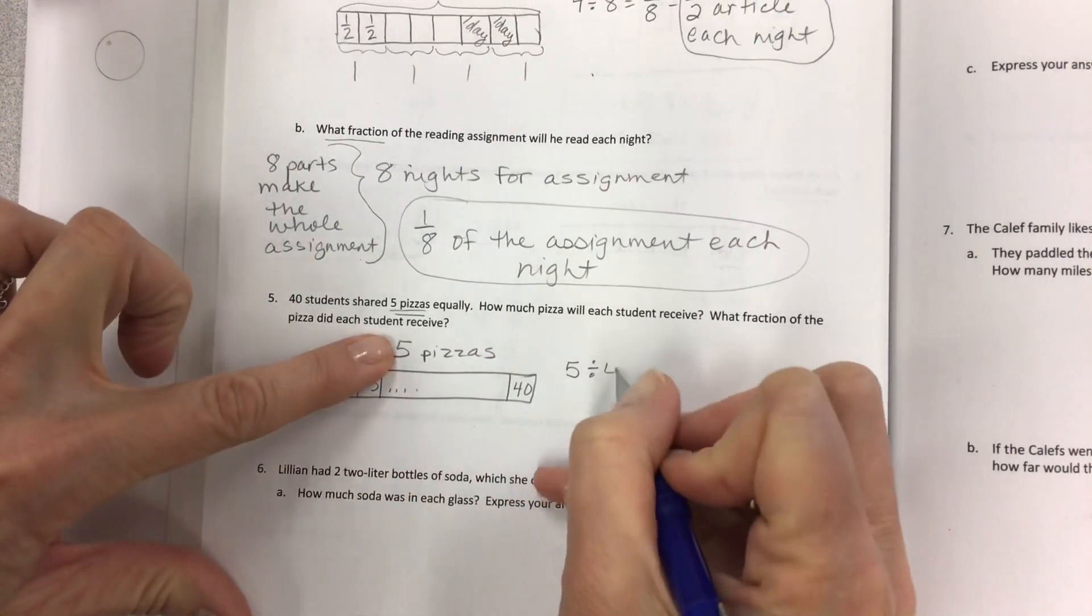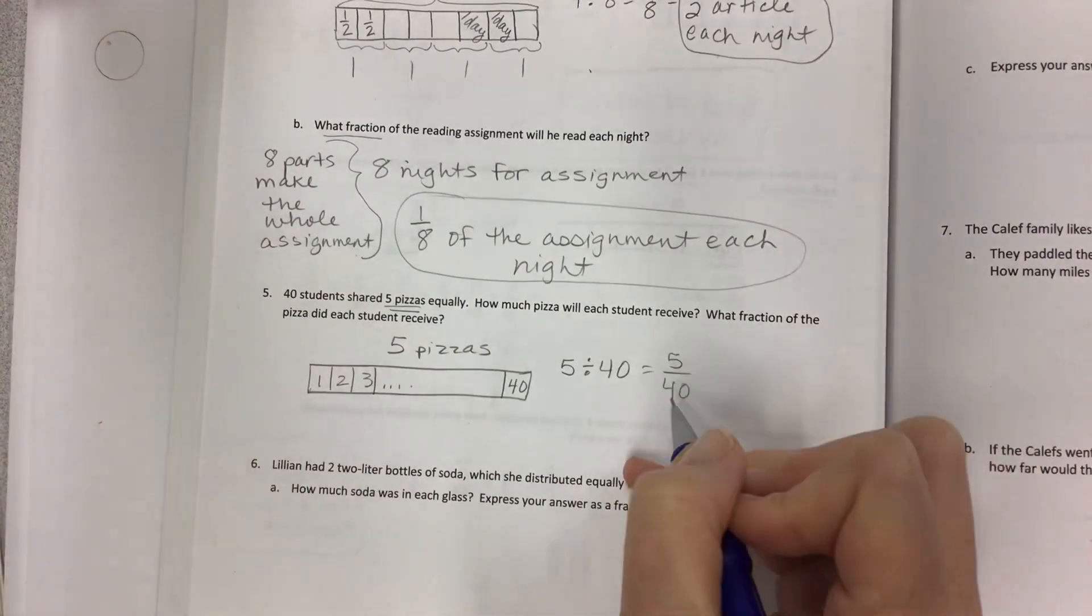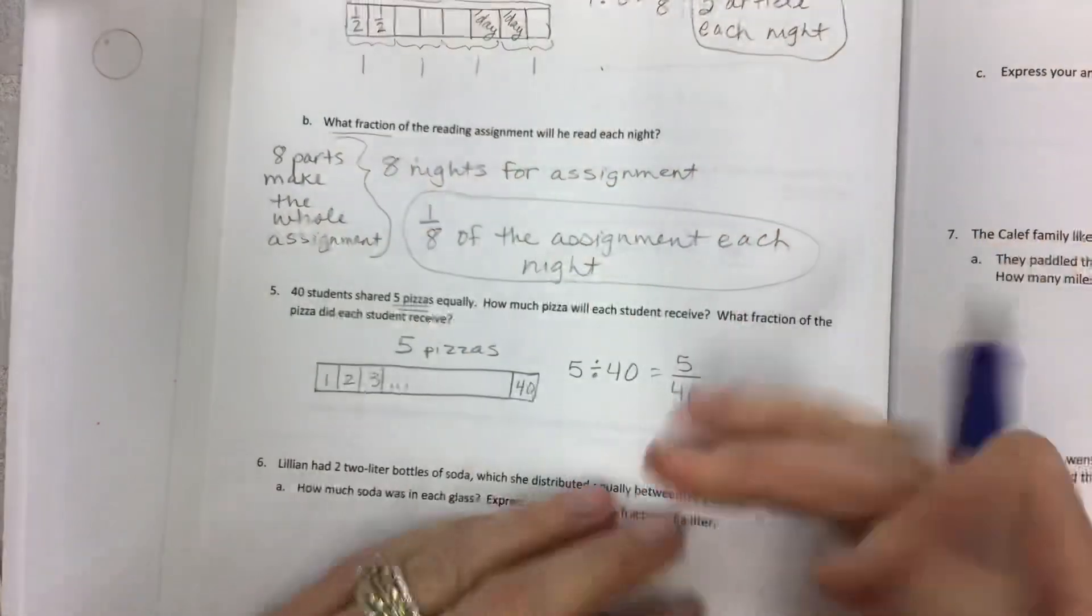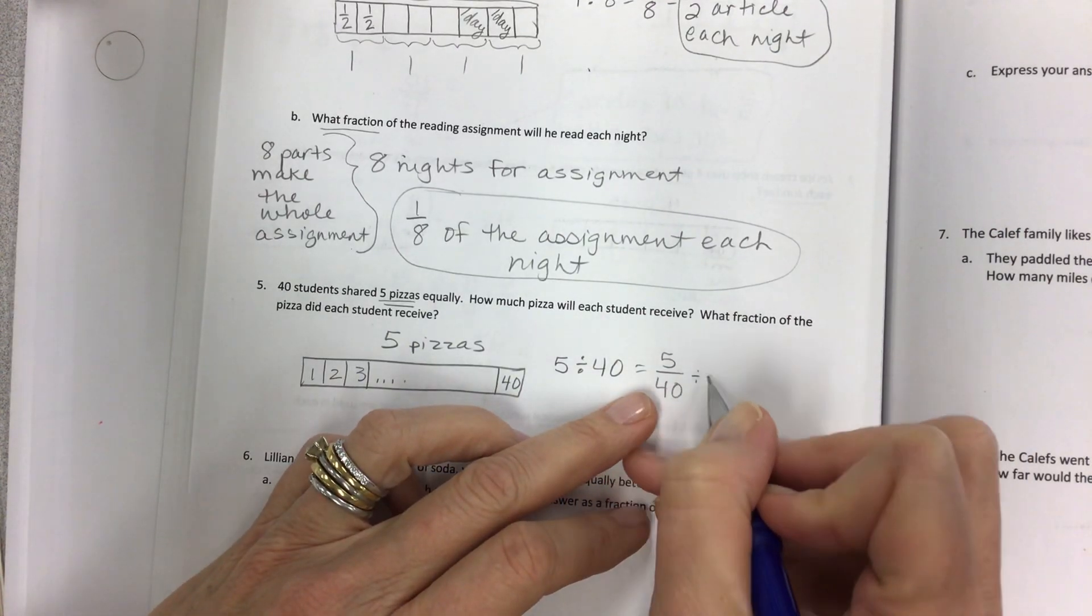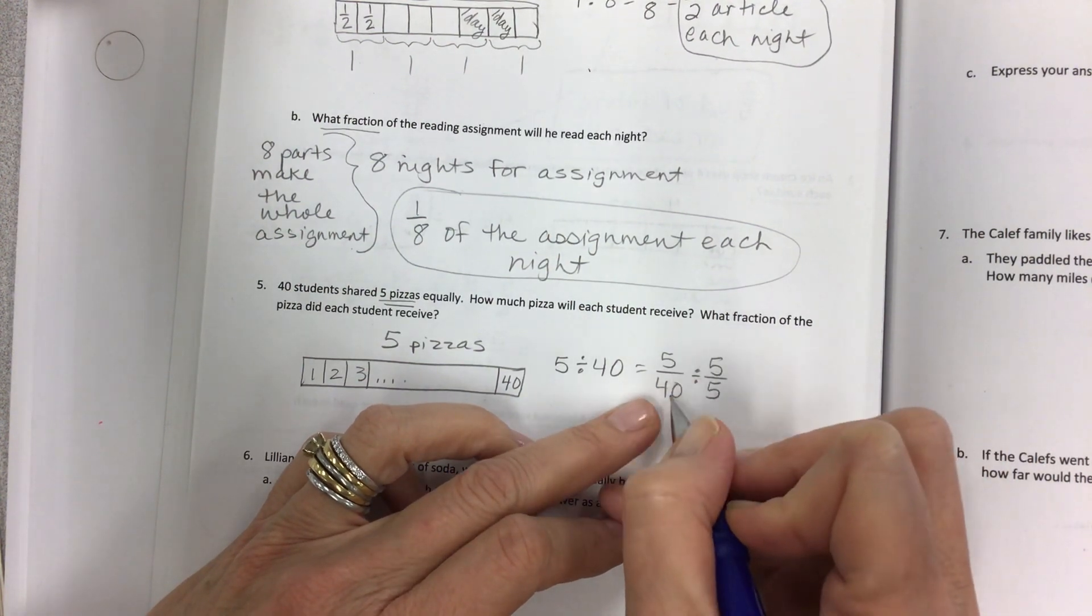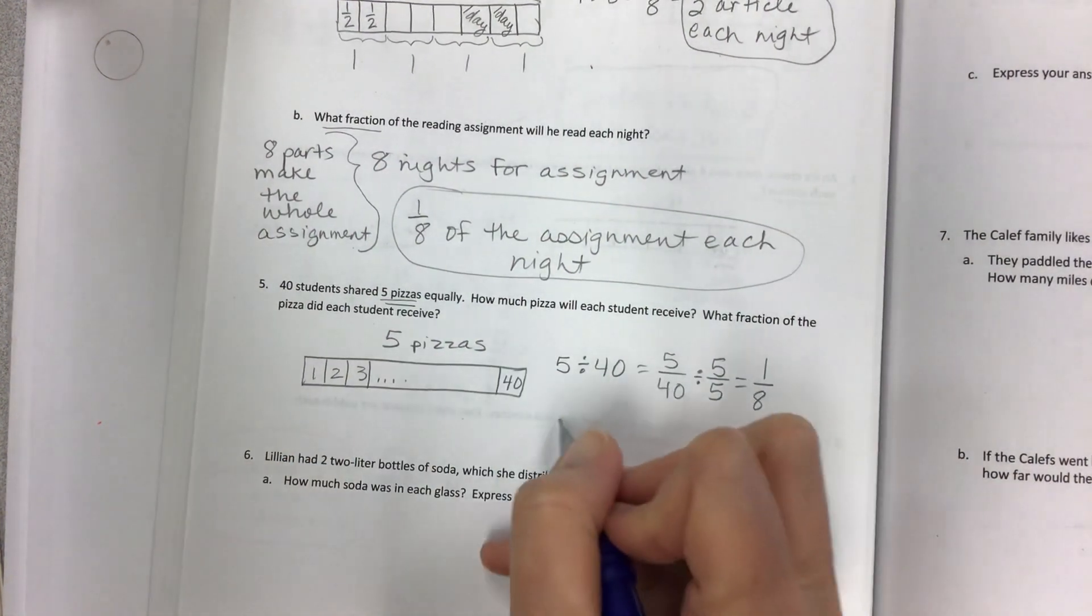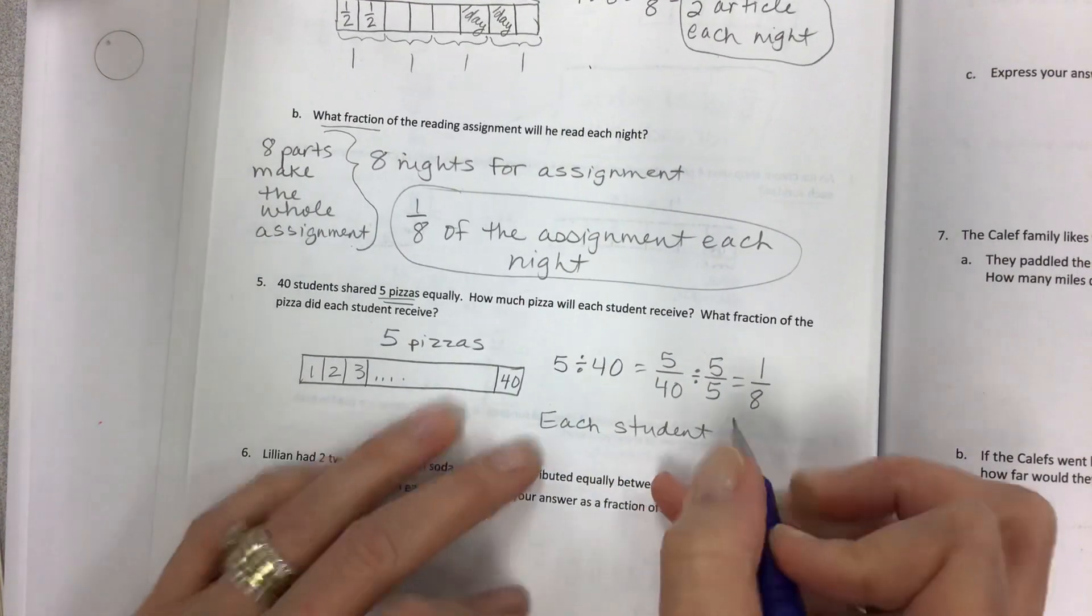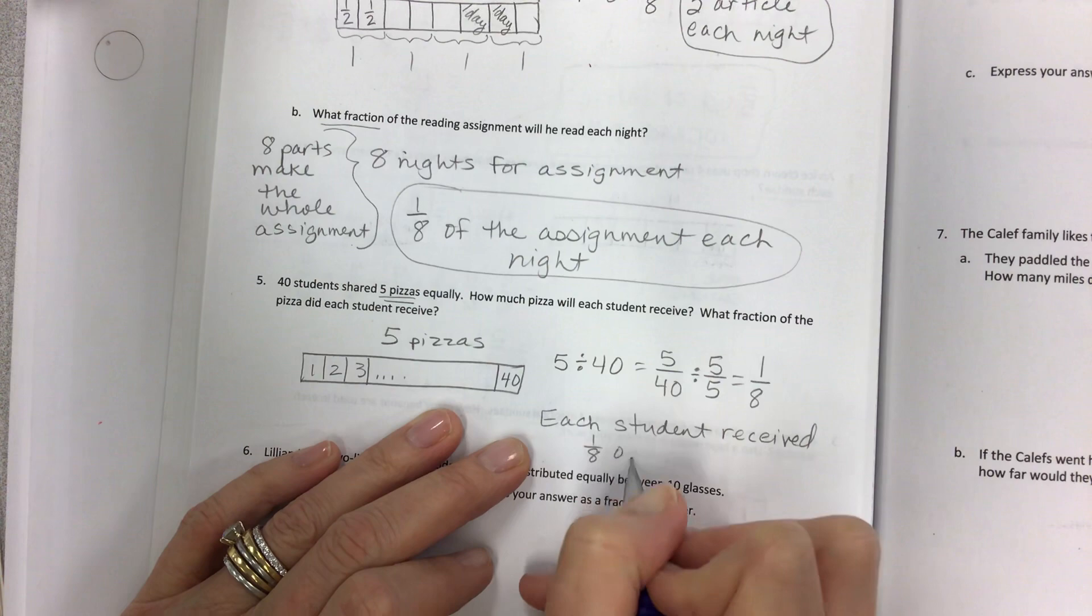How much pizza will each student receive? Five is what you have as a total divided by 40, which is equal to 5/40 or 5 divided by 40. You can simplify this. I always like to put equal because I want to do it in my head, but I will show you that if you want to simplify a fraction, you find a common divisor. Five fits evenly into both 5 and 40 to give you one eighth. And so what fraction of the pizza did each student receive? Each student received one eighth of a pizza.